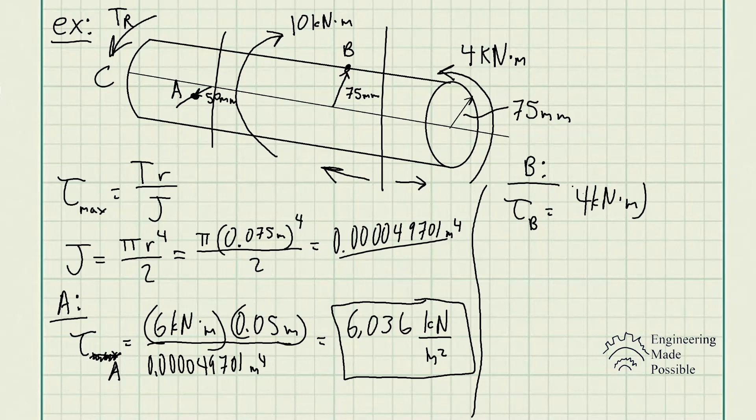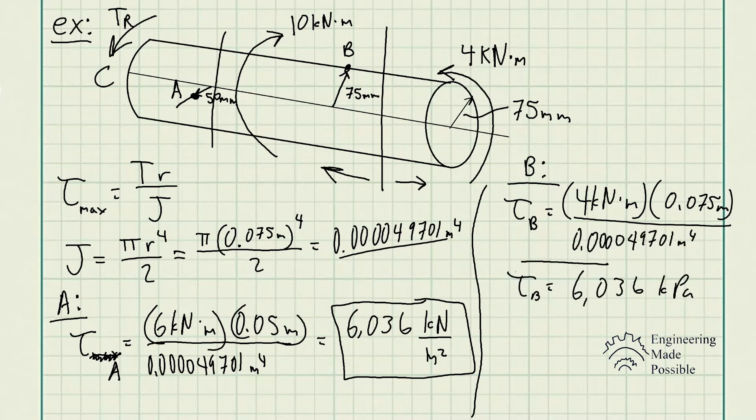Times the radius, 0.075 meters, divided by that polar moment of inertia, which gives us 6,036 kilopascals of shear stress.